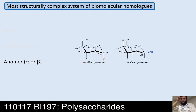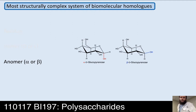The anomeric configuration, which is also just a stereochemical distinction but specifically at C1 — the C1 carbon can be either axial or equatorial, giving you alpha or beta structures. Here's glucose in both: alpha in red and beta in blue.